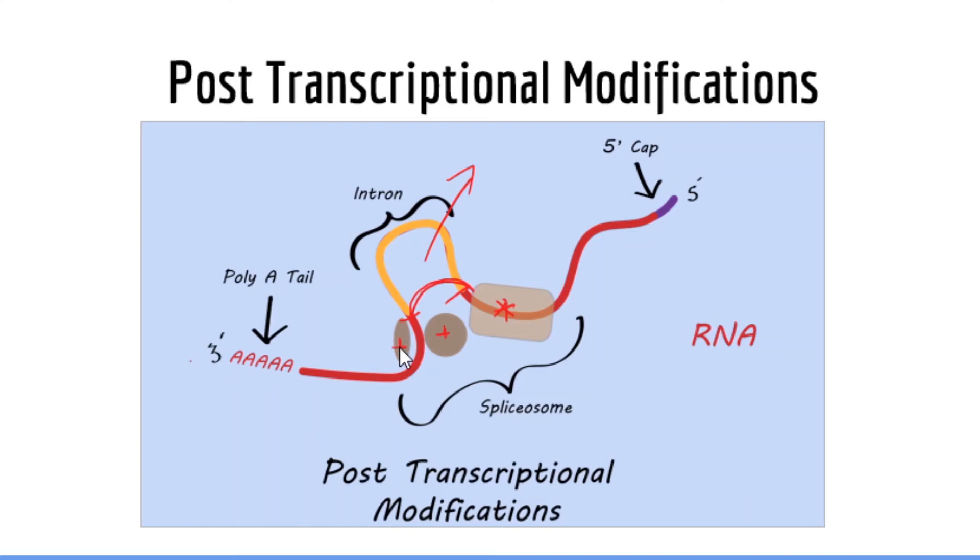Next, you have the addition of a poly-A tail. A poly-A tail is basically a series of adenosine nucleotides, several hundreds of them. Then we have the addition of the 5-cap. The 5-cap contains a lot of guanosine, and specifically modified guanosine, such as methylguanosine. Now you don't need to know that, but what I want you to know is that the purpose of the poly-A tail and the 5-cap is to add stabilization to the RNA.